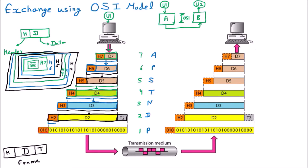This complete data is now passed to the physical layer, which deals with bits - zeros and ones. D1 is represented as 1,1,0,0,1 - the physical layer data. The physical layer also adds its header H1, which is also in bits - for example, zero, one, zero - so one final header is added.